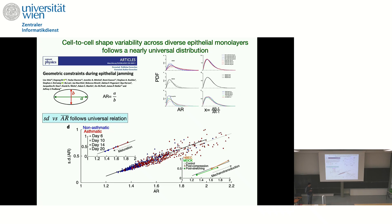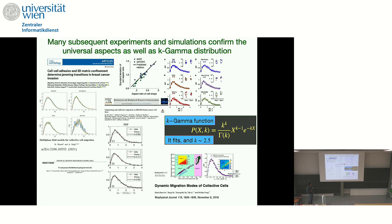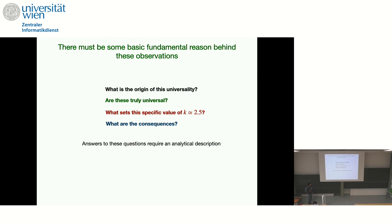The second result is that when they plot the standard deviation as a function of the average aspect ratio for all these diverse epithelial monolayers, they seem to follow the same universal relation. In many subsequent studies for both experiments and simulations, the applicability of the k-gamma function and the value of k around 2.5 has been confirmed across various cancer cell monolayers and theoretical active and non-active systems. All of these results suggest there should be some basic fundamental reason behind this observation, and the questions we address are: what is the origin of this universality, is it truly universal, what sets the specific value of 2.5, and why does the k-gamma function apply? Answering these questions requires an analytical framework.